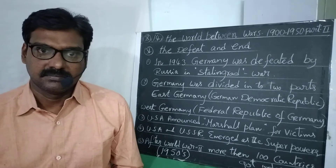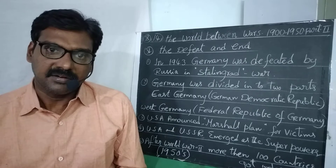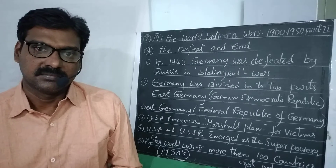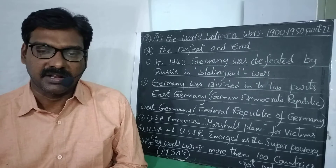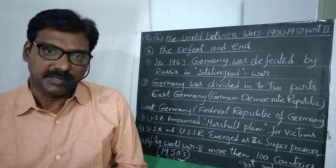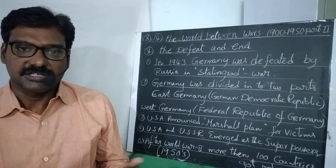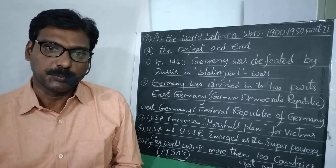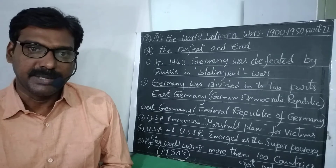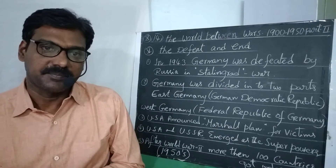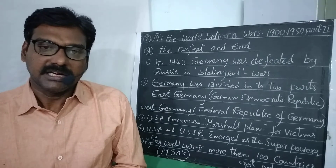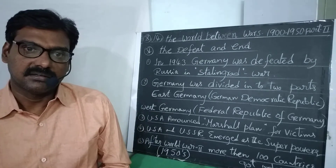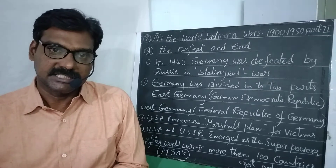Afterwards Germany was defeated and lost many wars against Russia, and against France and England. Then finally Russia and the Allied groups entered Berlin and captured Berlin, the capital city of Germany. Hitler accepted the defeat and Hitler and his close associates committed suicide.